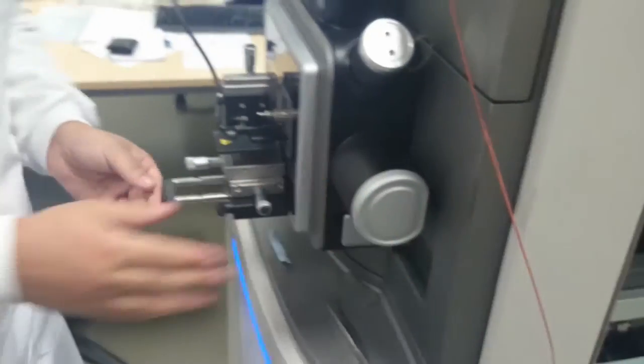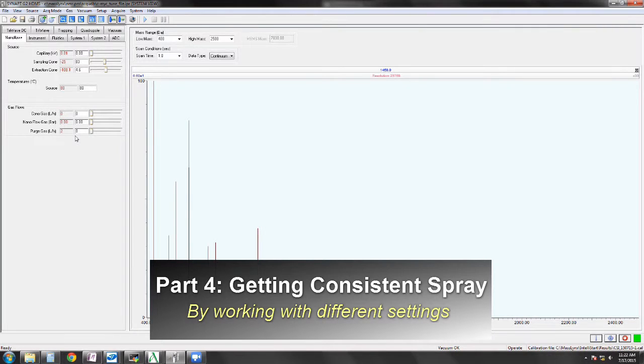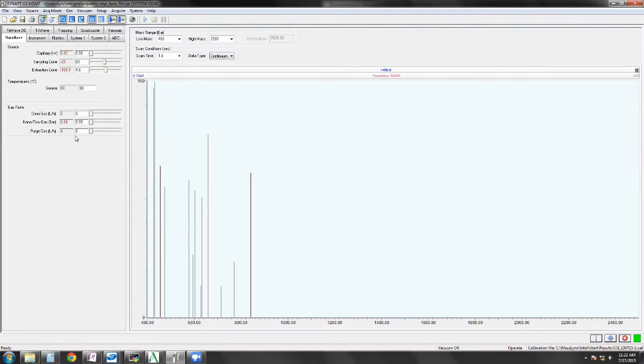When the instrument's all ready to go, close the source up, and we're now ready to acquire signal. Now we have our sample in the instrument, the tip is in place. We can now start acquiring some signal. I'm going to point out a few features of the software. Again, it's different depending on what instrument you have. There are certain key features that will be true throughout.